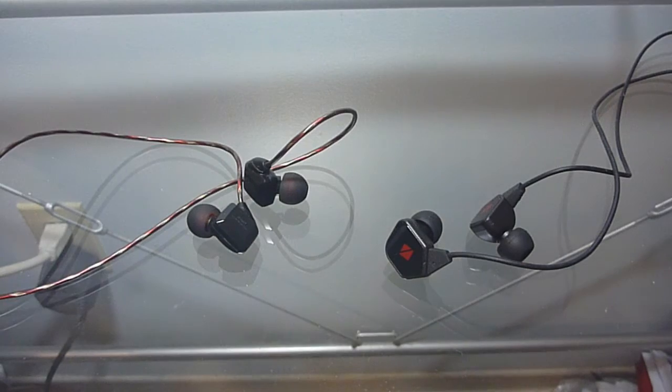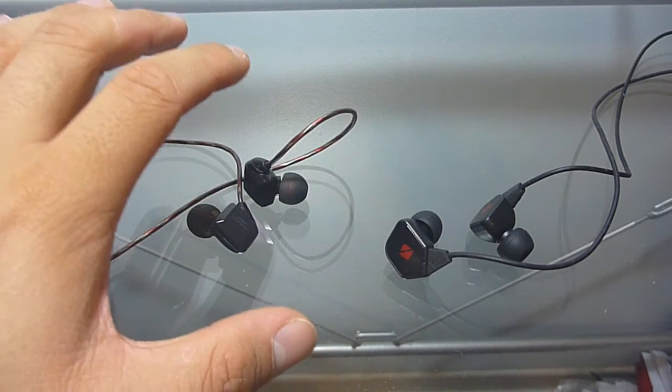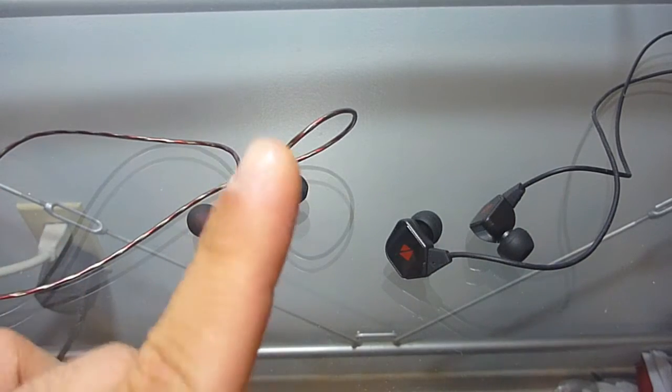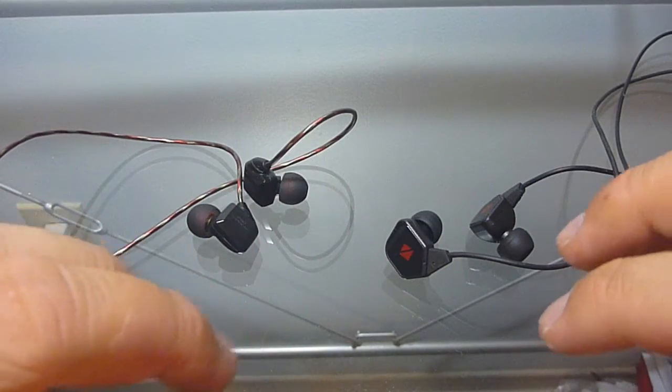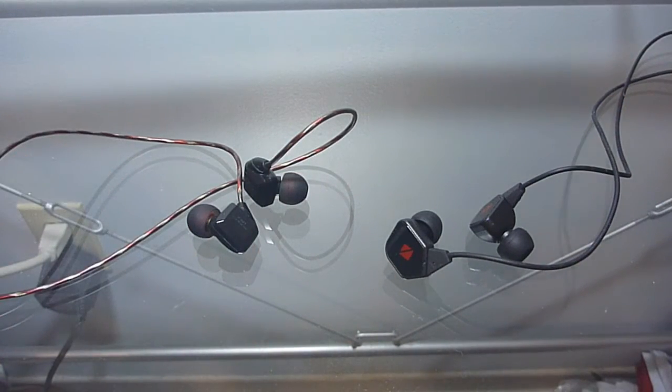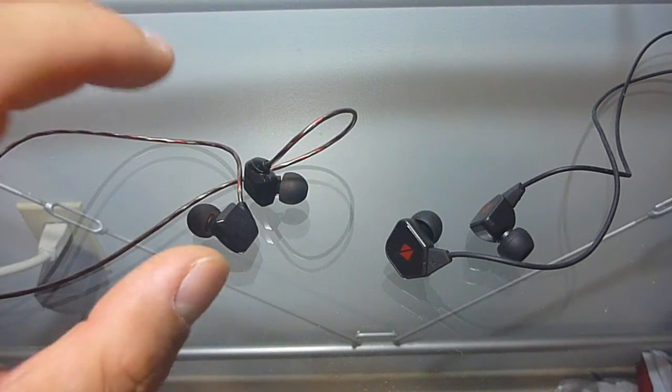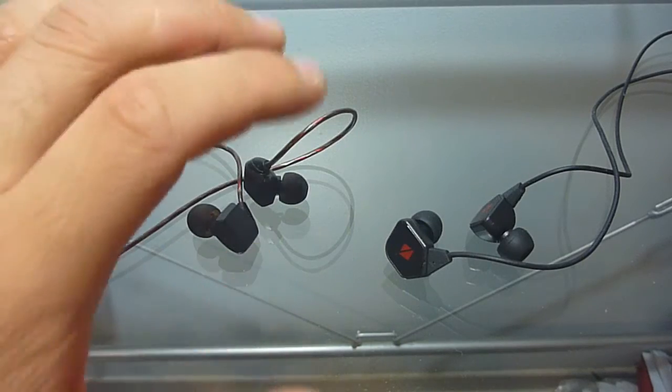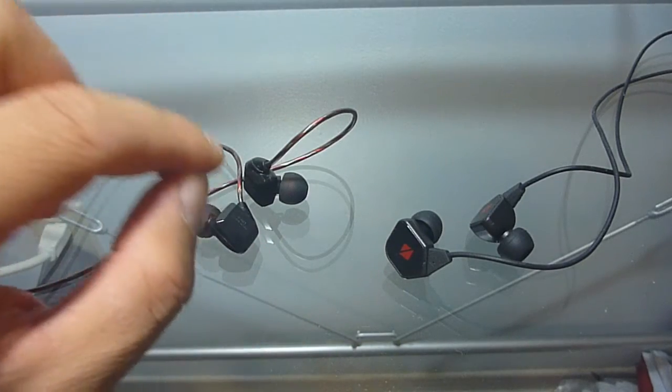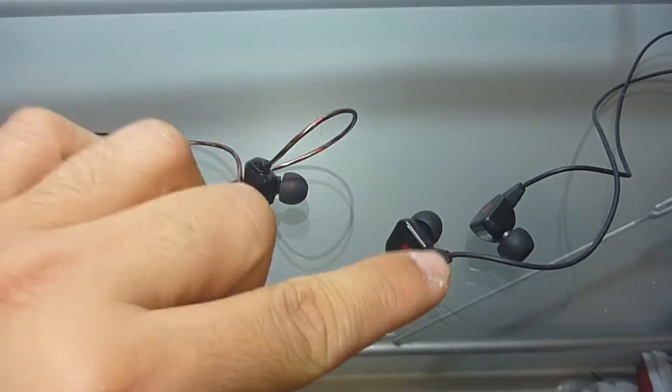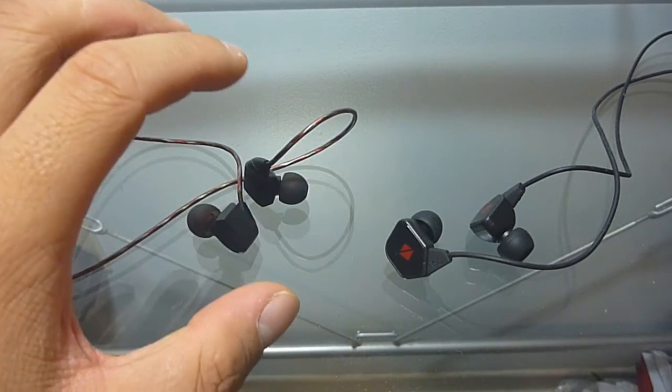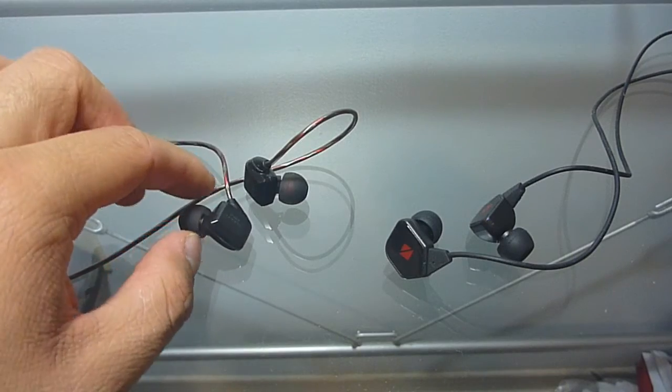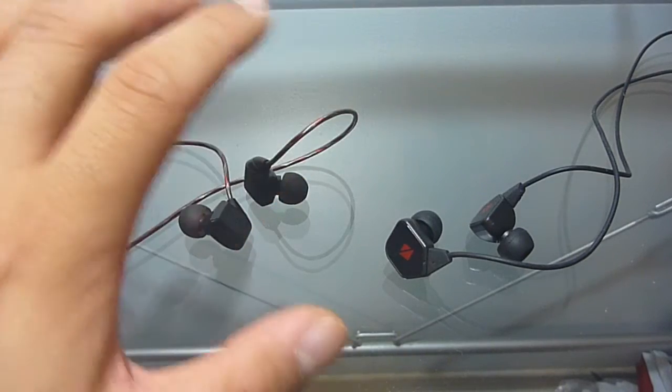So, what's my verdict between the V-Sonic GR07 base edition and the Havi B3 Pro 1? Well, if I had to pick one of these earphones to keep in the end of all of this, I would still say it's the V-Sonic GR07. And I still think that they're earphones to beat because it has a perfect combination of amazing build quality. Its isolation does lack compared to the Havi B3 Pro 1s, but it's super comfortable because of the adjustable nozzle and the earpiece are again very small as well. And the sound quality is just amazing.